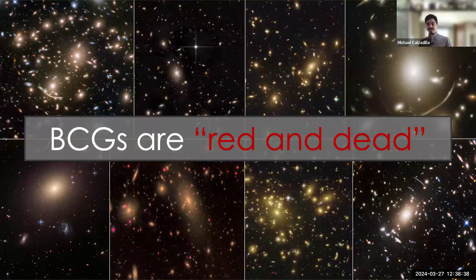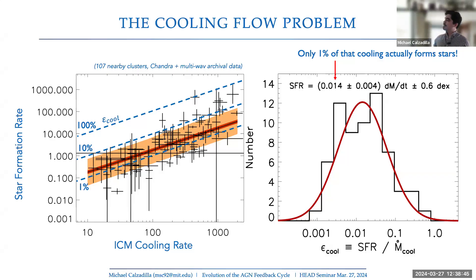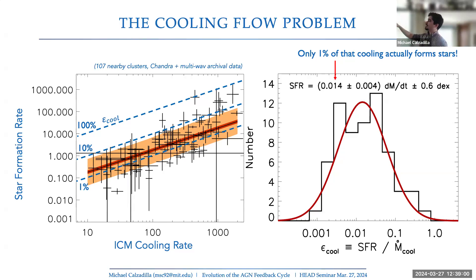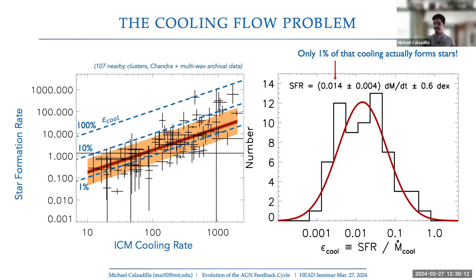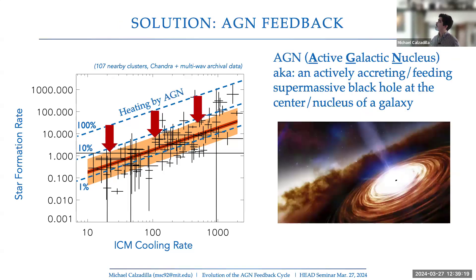This is the cooling flow problem in a nutshell: why aren't BCGs the bluest galaxies in the universe? If you take all the gas in a galaxy cluster and measure the maximal ICM cooling rate, and compare it to the star formation rate we actually observe at optical wavelengths, the ratio peaks at around 1%. So cooling is suppressed by about two orders of magnitude. The consensus is that AGN feedback suppresses cooling, acting like a thermostat with a set point of about 1%.